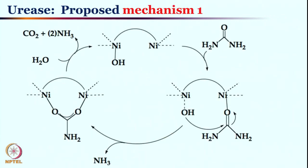The mechanism of urease is still controversial — it is not a solved deal. Water comes in and is deprotonated to give nickel hydroxide. Urea then binds with the nickel center. The carbonyl center of urea is the electrophilic center and is attacked by this hydroxide. Overall, the nucleophilic attack results in ammonia leaving the system, giving rise to an intermediate. This can be displaced by water, and then carbon dioxide and ammonia are generated — two equivalents of ammonia from one equivalent of urea.